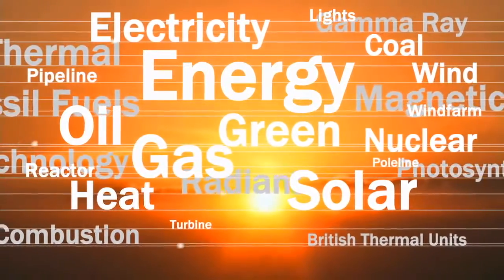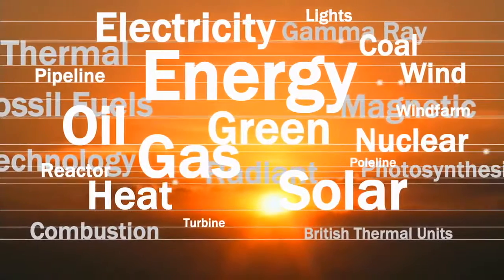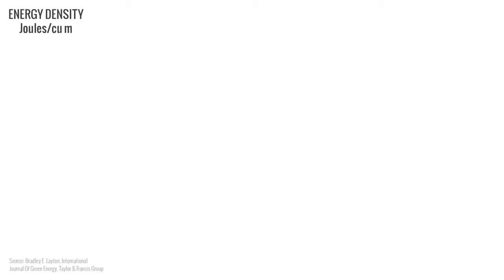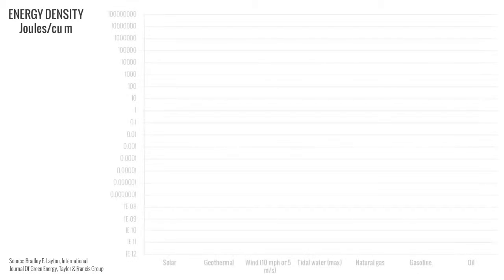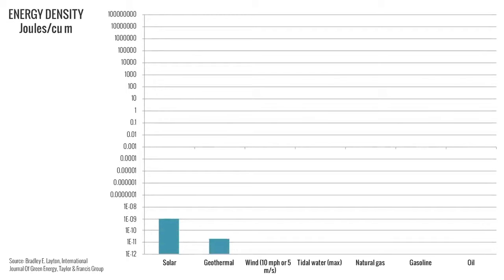One way to assess the value and usefulness of an energy source is its energy density. Energy density tells us what forms of energy make the most economic sense — which energy types deliver the most bang for your buck. Energy density is measured by the amount of energy per unit volume, meaning how much energy is contained within a given quantity of material.